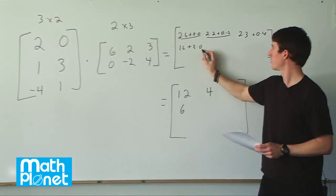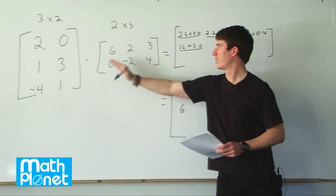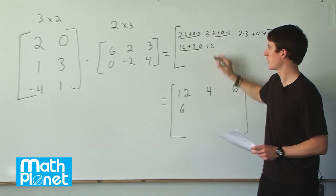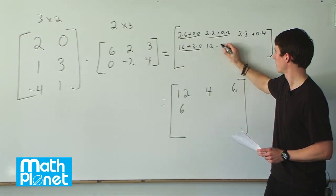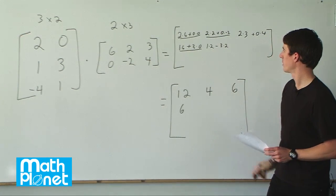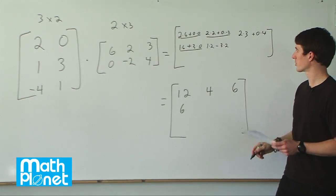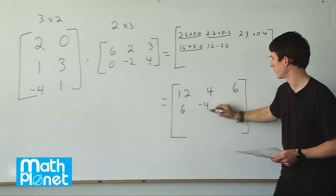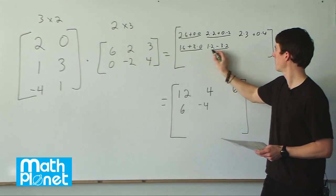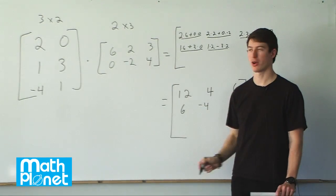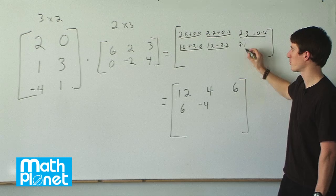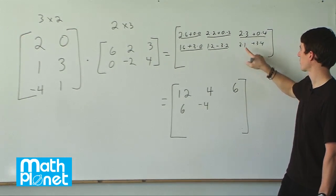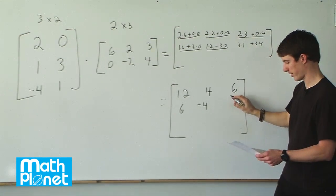Next we have second row, second column: 1 times 2 and 3 times negative 2. So that gives us 2 minus 6, which is negative 4 in this location. Finally for the second row, third column: we have 3 times 1 and 3 times 4, which gives us 3 plus 12, so the value is 15.